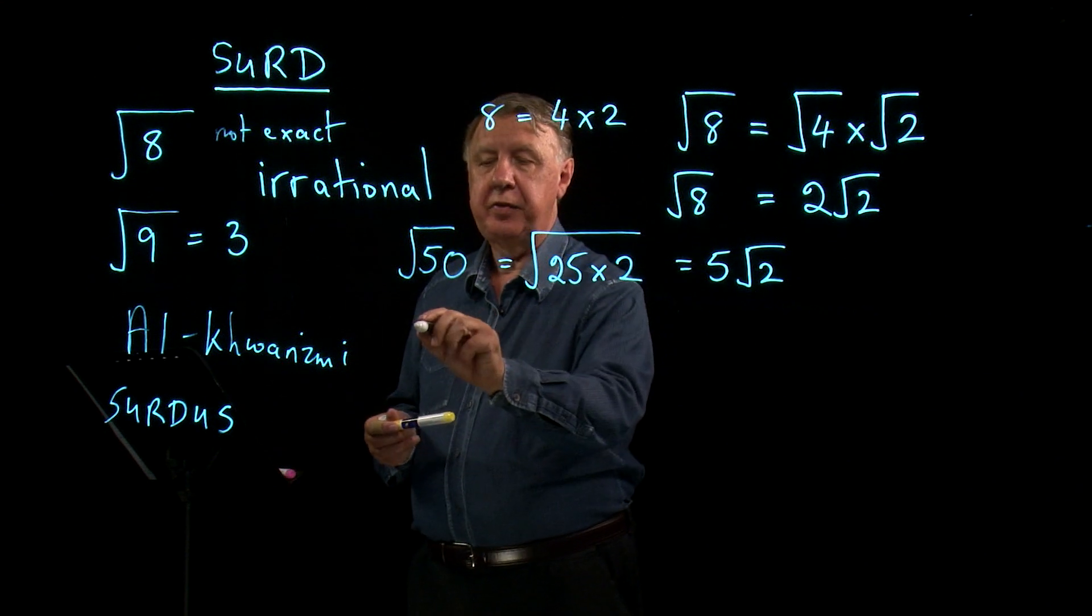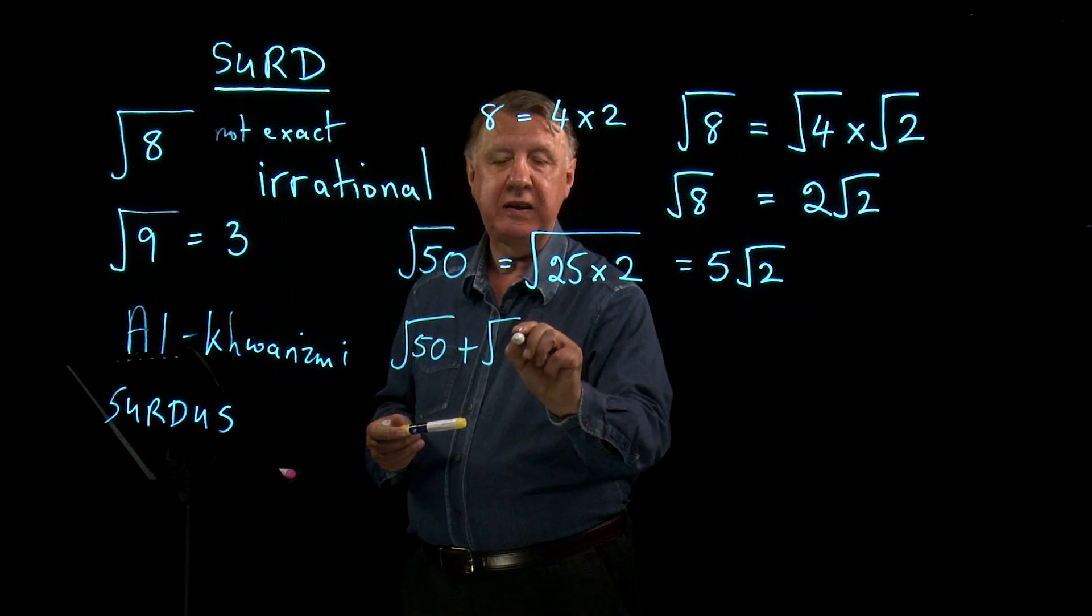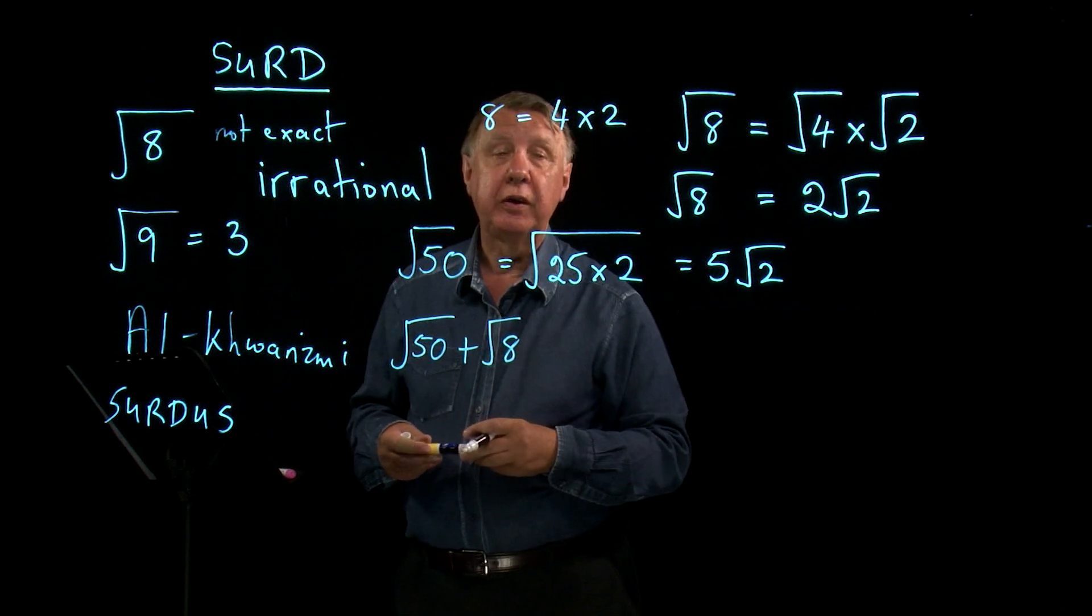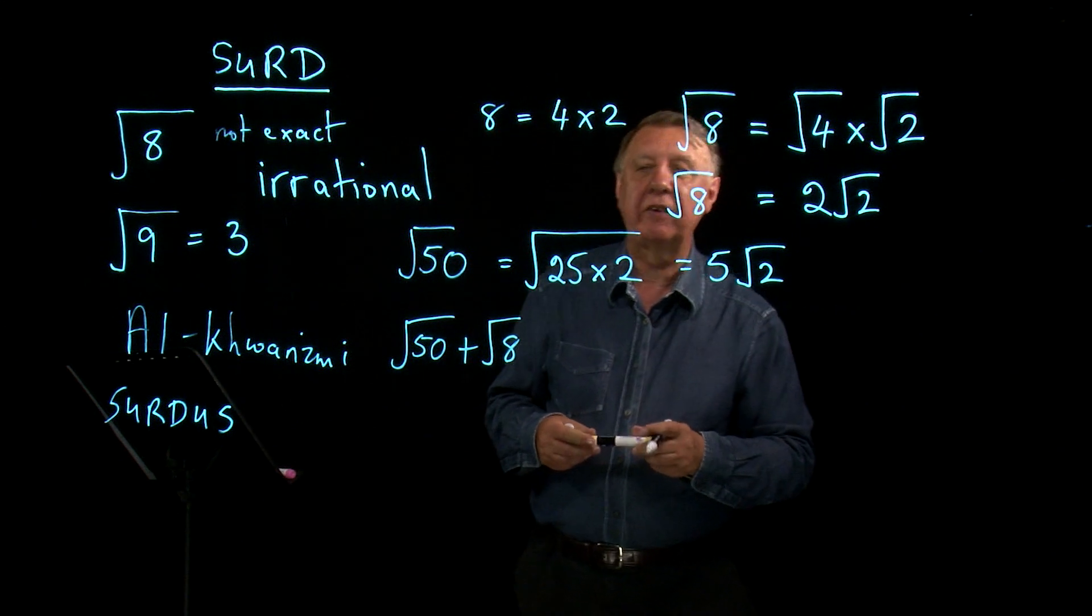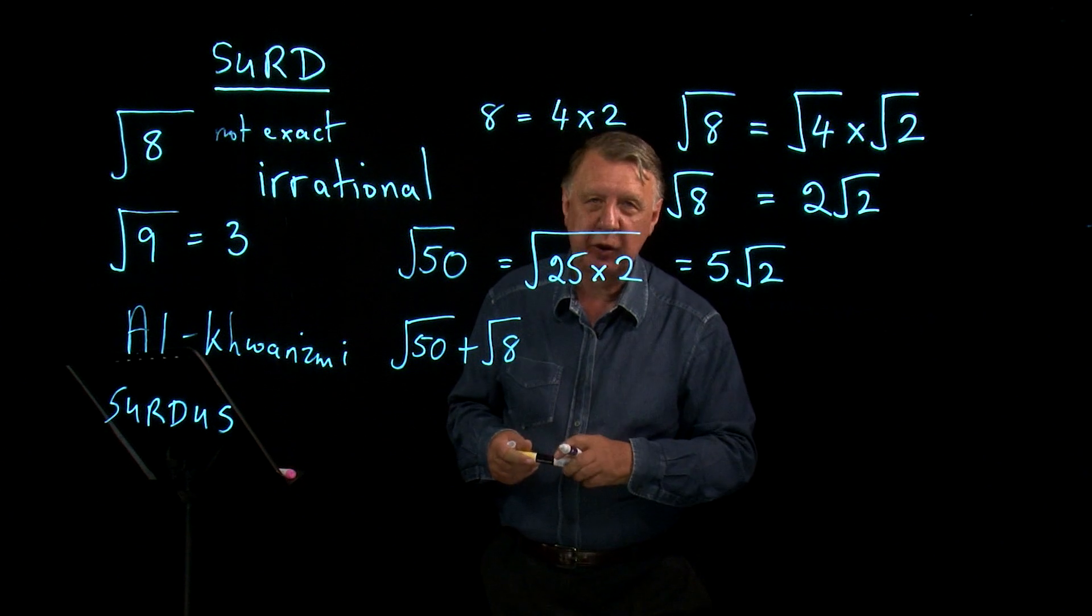So if I was asked to add up the square root of 50 and the square root of 8, what would I do? Well, we know what a lot of us would do. We'd get the calculator out, we'd punch in two numbers, and we'd write a decimal answer.